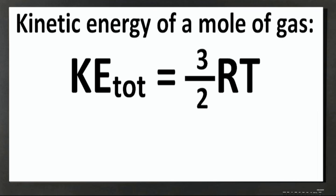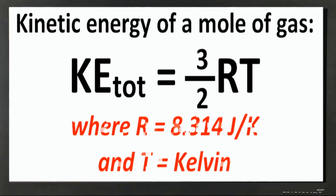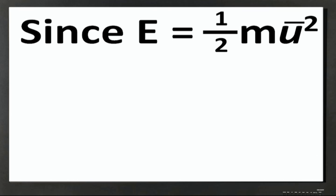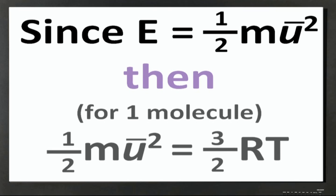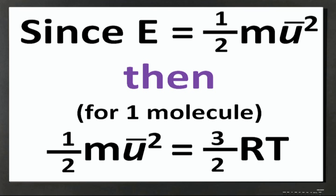According to the kinetic molecular theory, the total kinetic energy of one mole of any gas is equal to three-halves RT, where R represents the universal gas constant, 8.314 J per K, and T represents the absolute or Kelvin temperature. Since the energy of a moving particle is equal to one-half its mass times the square of its average speed, then for one molecule of a gas we may write: one-half mass times the square of the average speed of the particle is equal to three-halves RT.